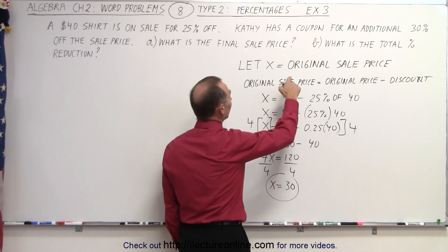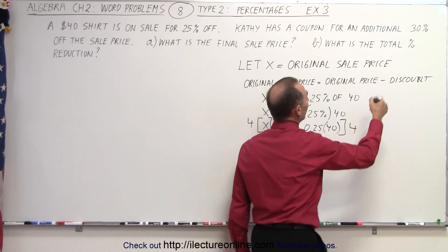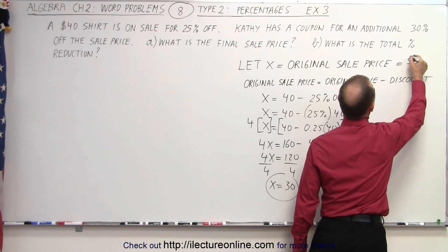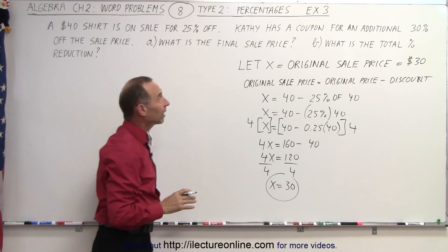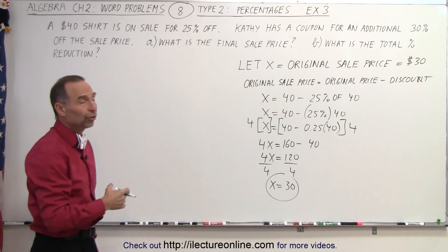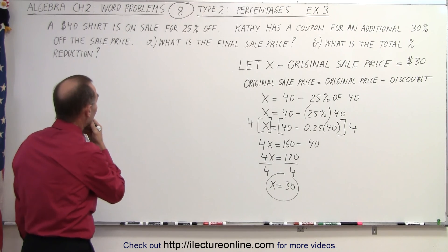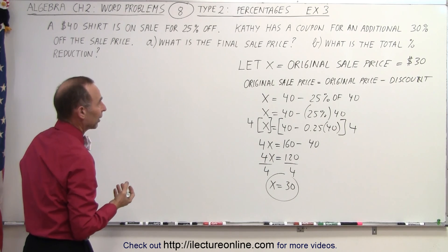And since x was representative of the original sale price, we can say that this is therefore equal to $30. Now they tell us that we have a coupon for an additional 30% off. What is the final sale price?